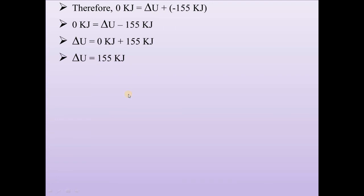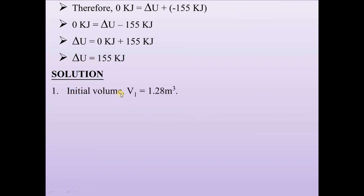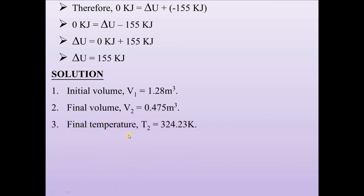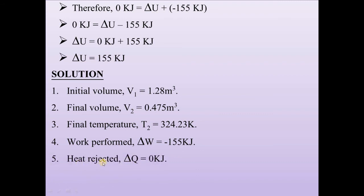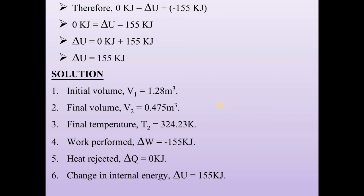We have now calculated all six parameters. To summarize: Initial volume V1 = 1.28 m³, Final volume V2 = 0.475 m³, Final temperature T2 = 324.23 K, Work performed ΔW = −155 kJ, Heat rejected ΔQ = 0 kJ, Change in internal energy ΔU = 155 kJ. I hope you understood this problem. If you have doubts, please comment, like, share, and subscribe to our channel, The Mechanical Engineers Team. Thank you.